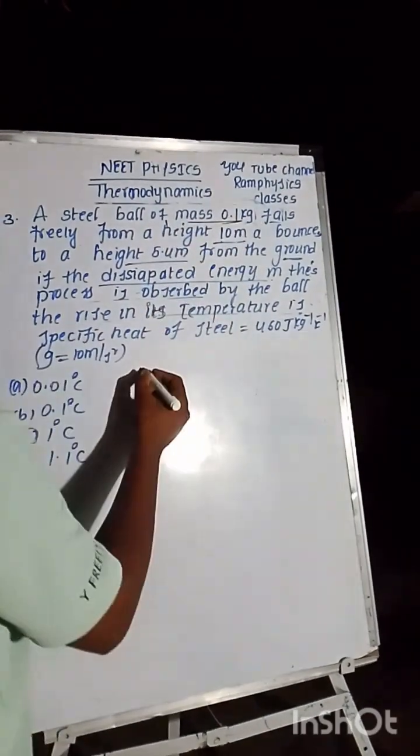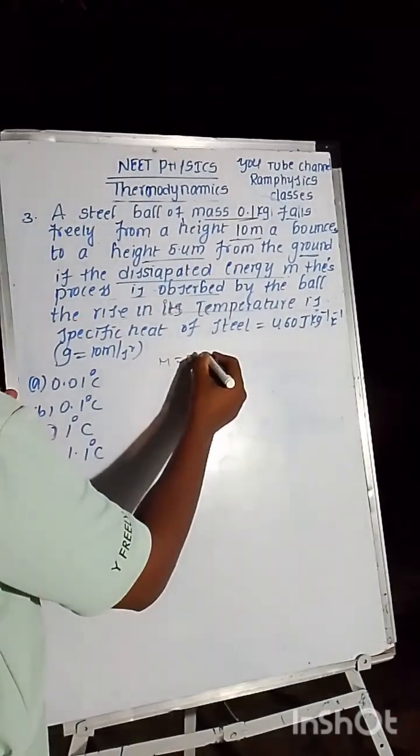A steel ball of mass is equal to 0.1 kg. So we are writing first of all the given data.